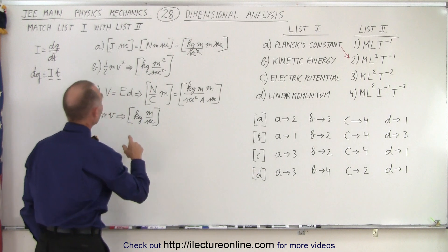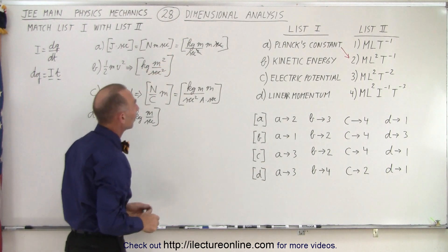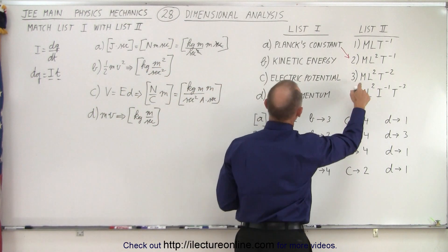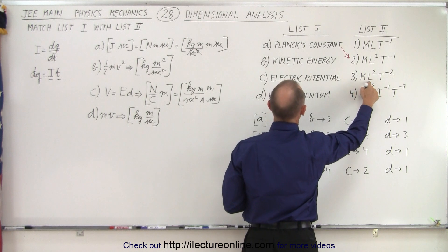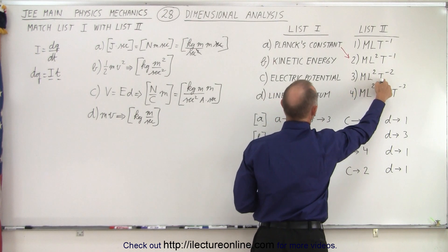For part B we have kilogram meter squared per second squared. So that gives us mass, distance squared divided by time squared.